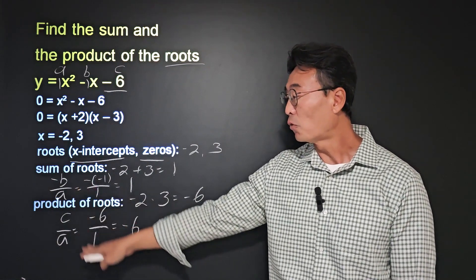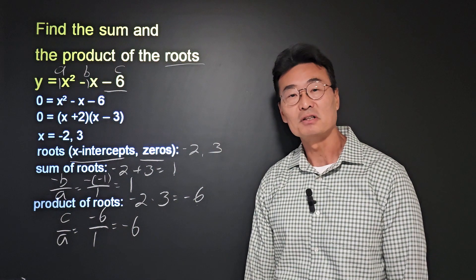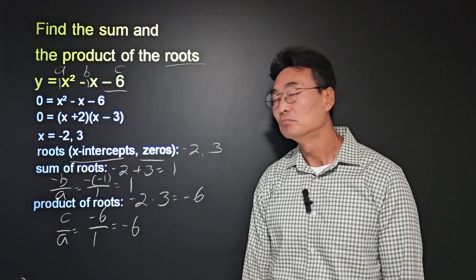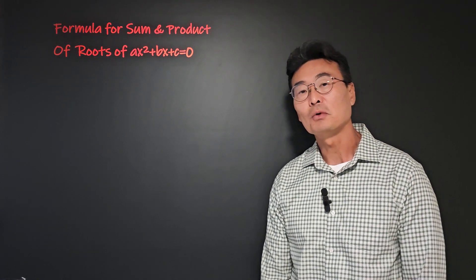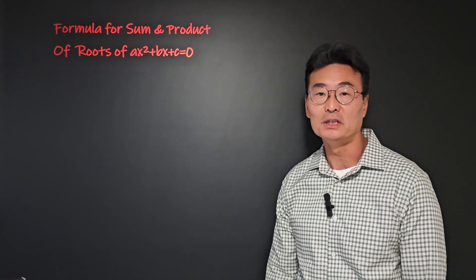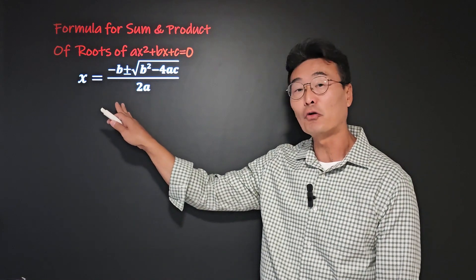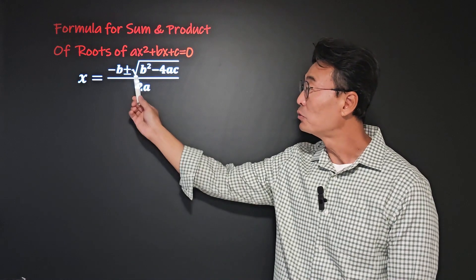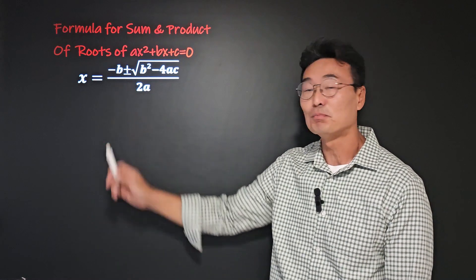The formulas for the sum and the product of roots are simple enough. In the next part of the video, these formulas are derived using the quadratic formula. Starting with ax squared plus bx plus c equals 0, we solve for x using the quadratic formula: negative b plus or minus square root of b squared minus 4ac, all over 2a.